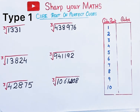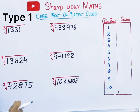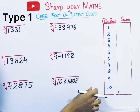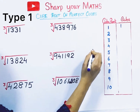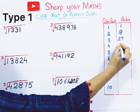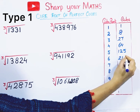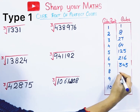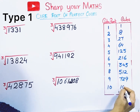Cube root of perfect cubes — how to find the cube root using a trick. First, you should know the cubes of numbers 1 to 10. 1 cubed is 1, 2 cubed is 8, 3 cubed is 27, 4 cubed is 64, 5 cubed is 125, 6 cubed is 216, 7 cubed is 343, 8 cubed is 512, 9 cubed is 729, and 10 cubed is 1000.